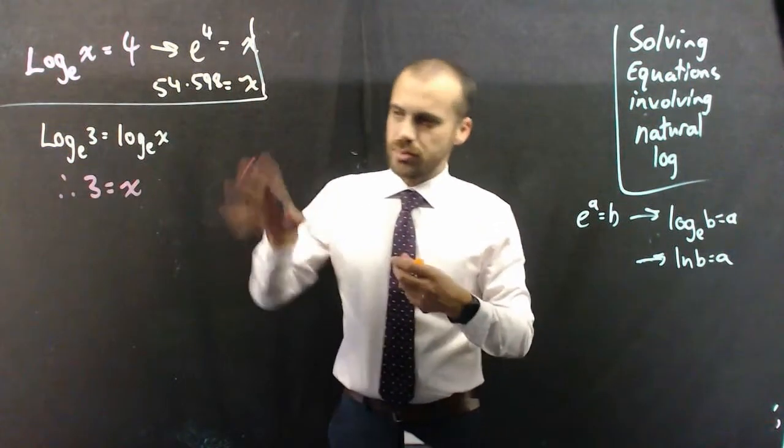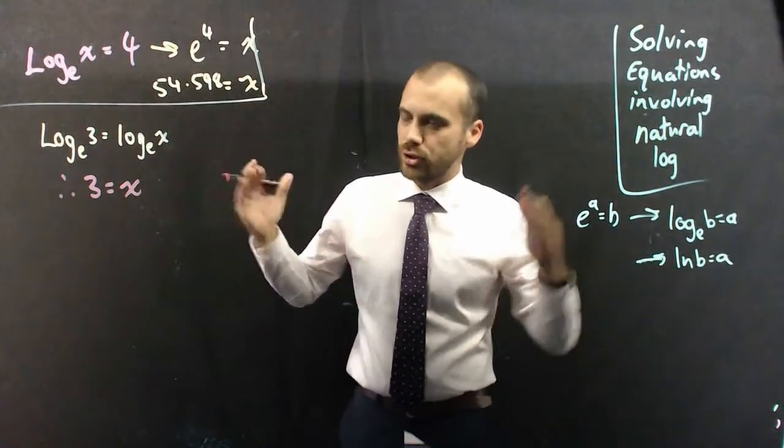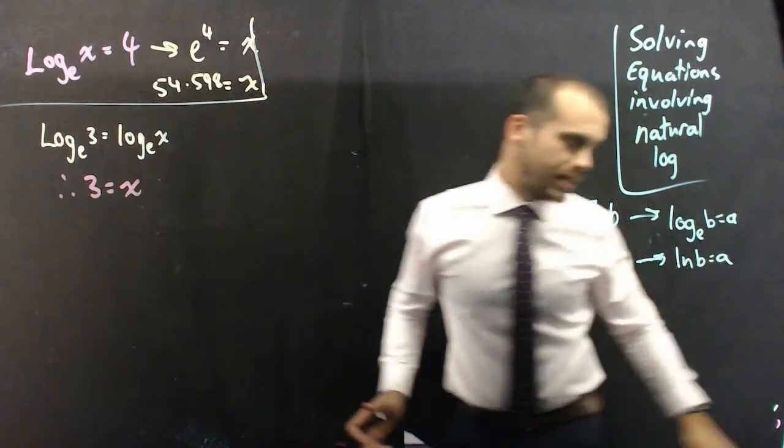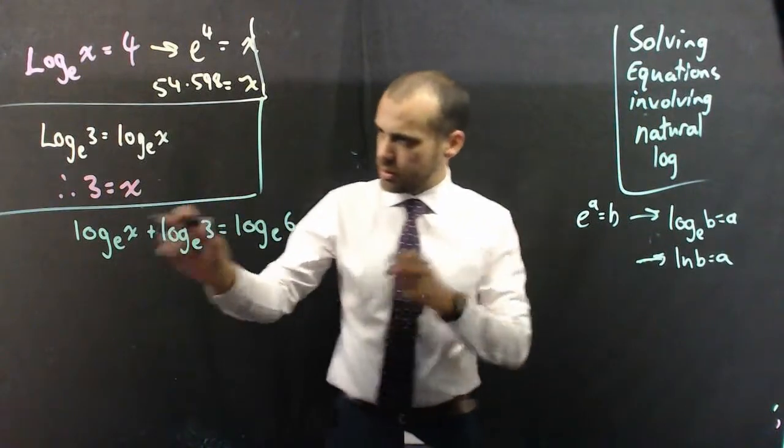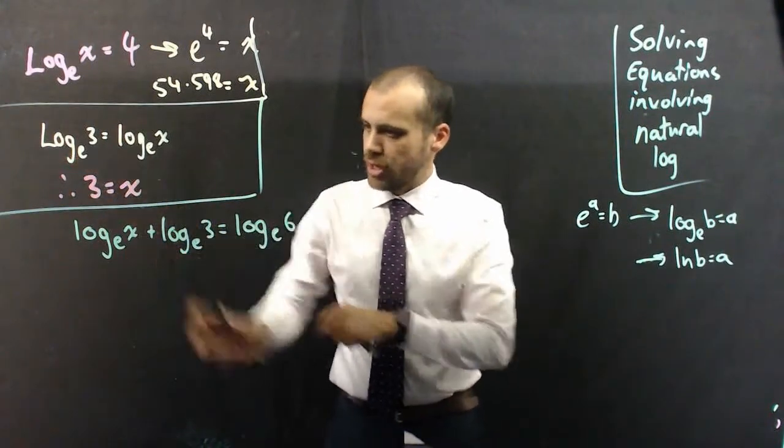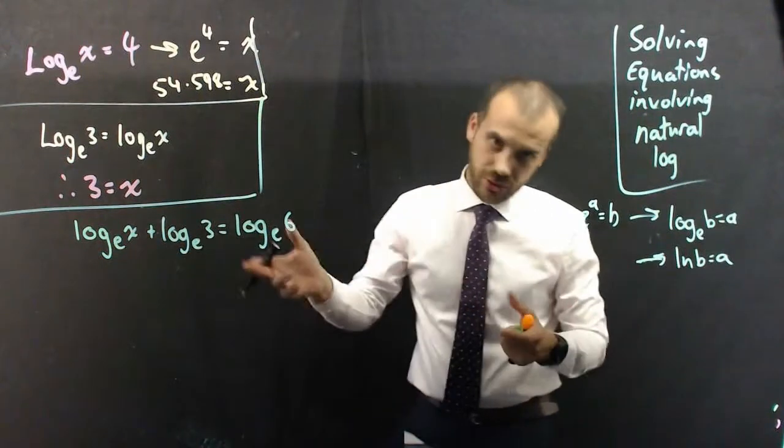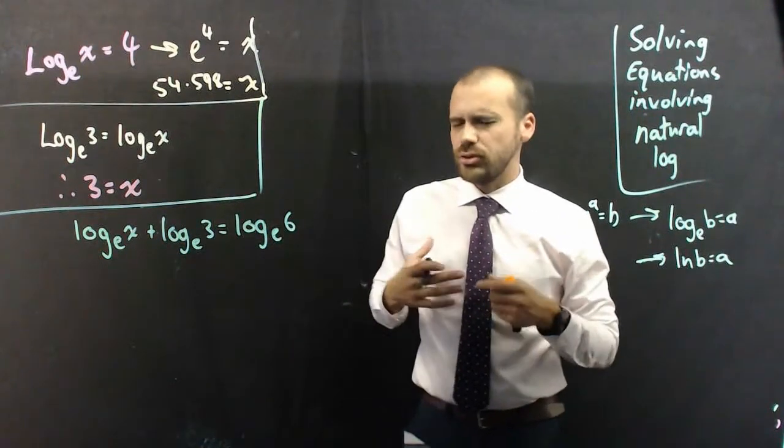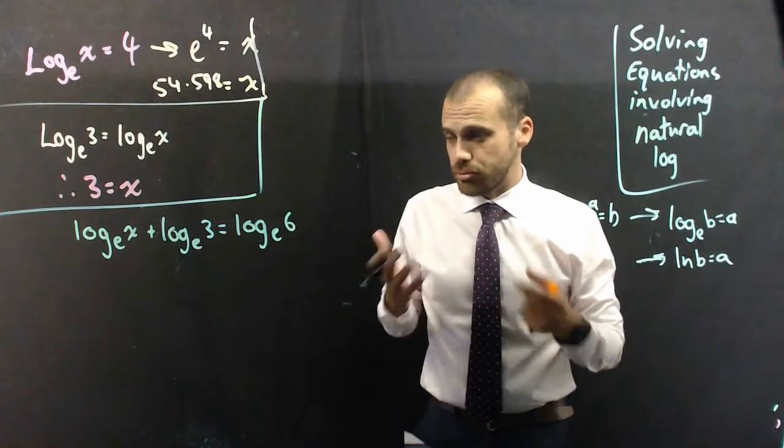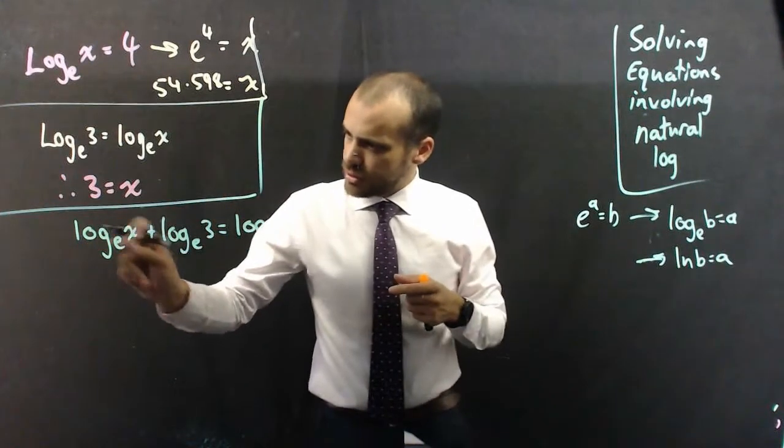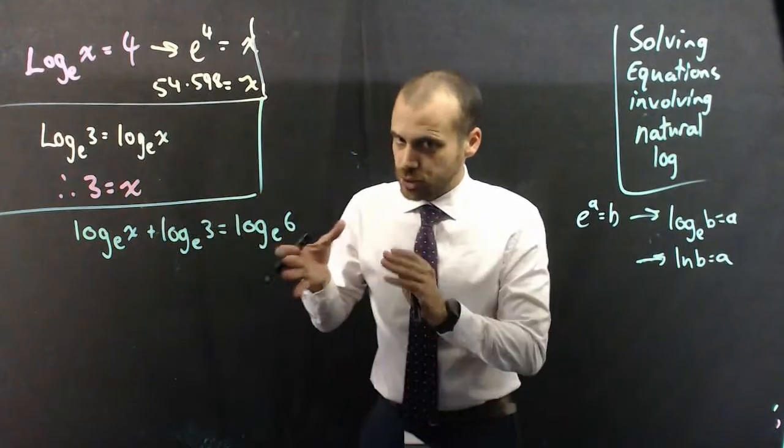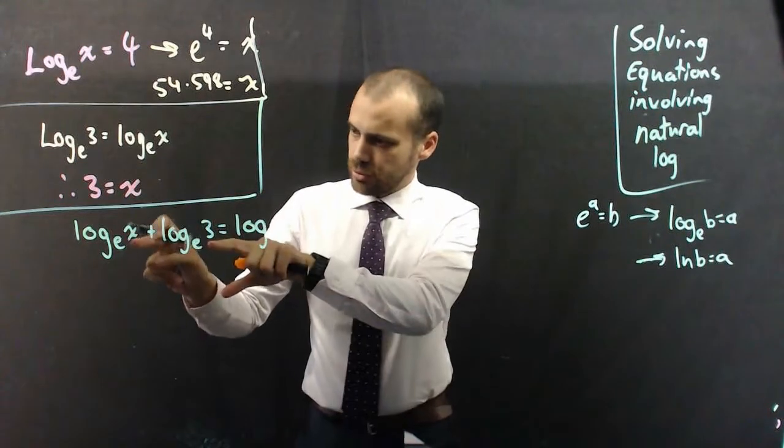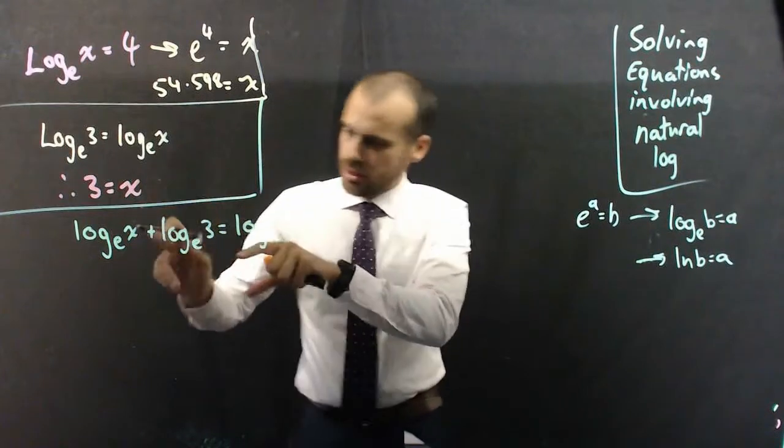So, of course, questions could be more complicated than that, and your goal is to get them into that shape. For example, something like this. Now, we want to get it into that shape, but we have 3 logs, not 2 logs. Luckily, you know your log laws, or you remember your log laws. So, if there are 2 logs with the same base added together,